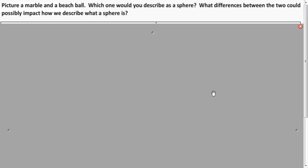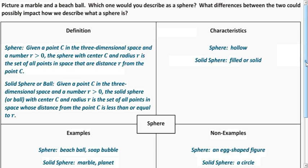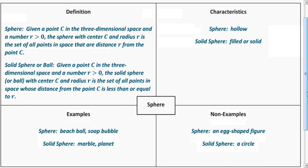Now we want to talk about spheres. Think about the difference between a marble and a beach ball — which one would we call the sphere? A sphere is similar to a circle: it refers just to the outside part of that shape, so a sphere is hollow. In math, we call the marble a ball or solid sphere, which includes everything inside the shape. The sphere is just the outside; the solid sphere is the entire thing with the inside included.